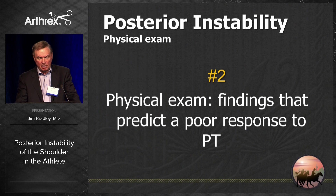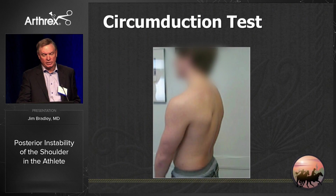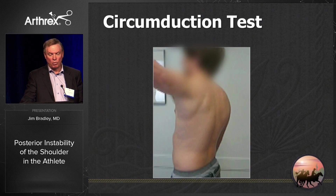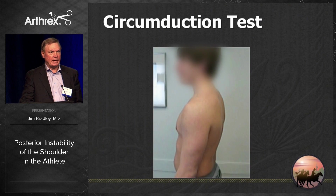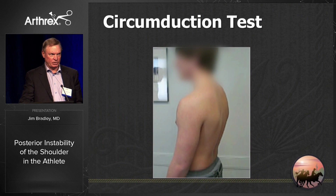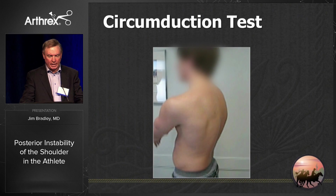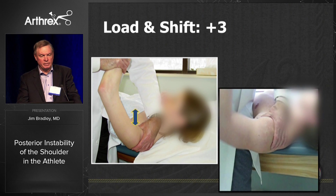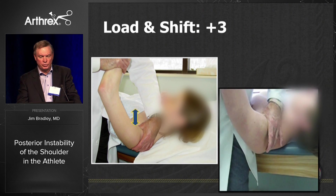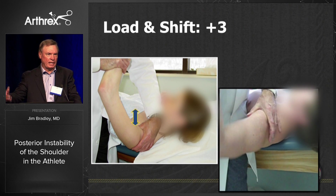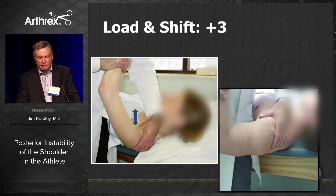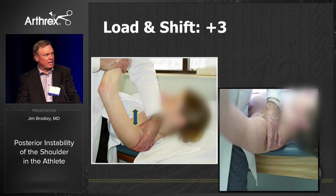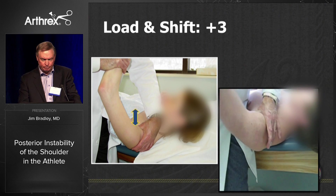The second thing we learned is physical exam findings that predict a poor response to physical therapy. If you have a patient with a circumduction test like this — no matter what age — I really can't get them better with physical therapy; they go out the back and reduce themselves. The next thing that worries me is the load and shift test: if you put the arm in neutral and they just slide right out the back and stay there, that's also a poor prognostic factor for physical therapy.